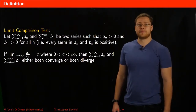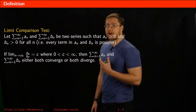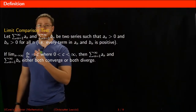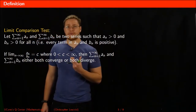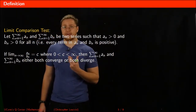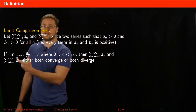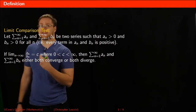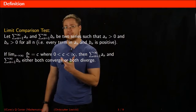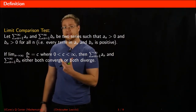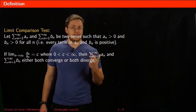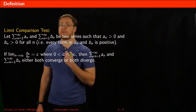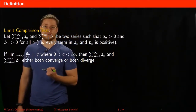Here's what the limit comparison test says. You need two series aₙ and bₙ where all of the terms in both series are positive. If you then take the limit of aₙ divided by bₙ as n goes to infinity and it equals c, where c is some positive number between 0 and infinity, then the series aₙ and the series bₙ either both converge or they both diverge.